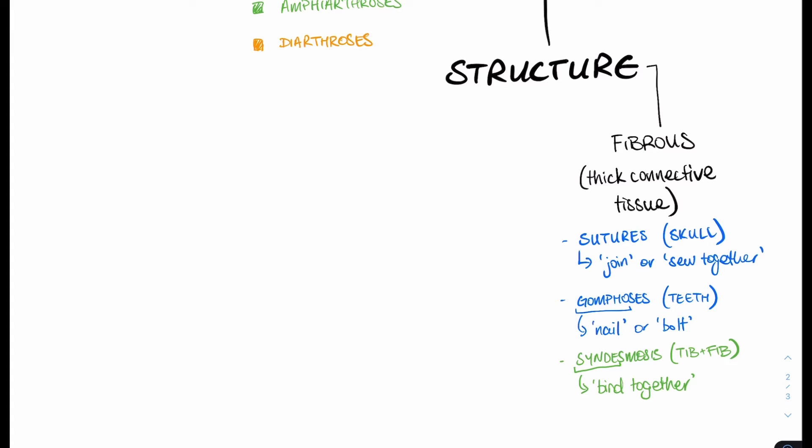Okay, so that was fibrous joints, underneath which we had three types: sutures, gomphoses, and syndesmoses. They either allowed no movement or the tiniest bit. Now, the next type of structural joint classification are the cartilaginous joints. In the name, cartilaginous joints are whereby a piece of cartilage is going to unite two bits of bone. Under cartilaginous joints, there are two main subcategories.